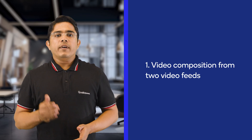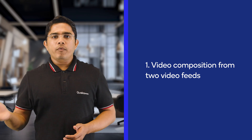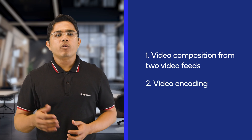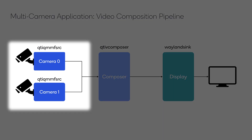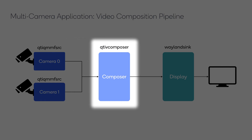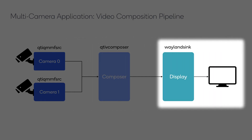We will now look at the end-to-end pipeline for two different use cases of a multi-camera application. First, video composition from two video feeds, and then video encoding. For the video composition use case, the video is first captured from the feeds of both cameras using QTI QMMF Source. Then the QTI-V Composer produces a composite video stream which is sent to the Wayland DisplaySync for live preview.